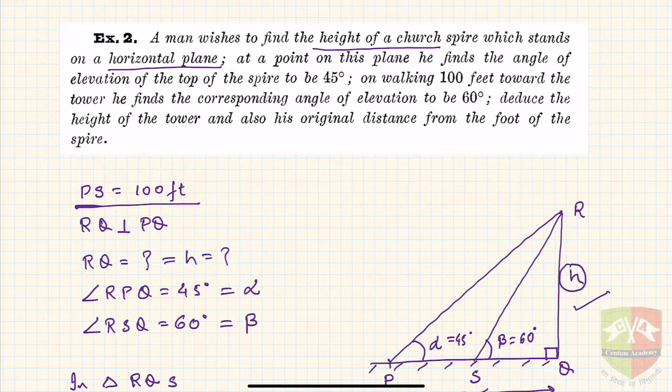You can deploy this methodology to find height of any building. On a horizontal plane, at a point on this plane, he finds the angle of elevation of the top of the spire is 45 degrees. I have mentioned that as α = 45 degrees here. That is the angle of elevation of the church spire.